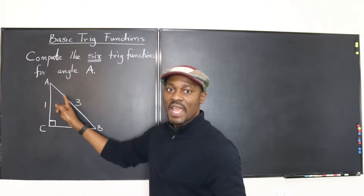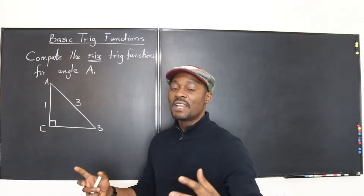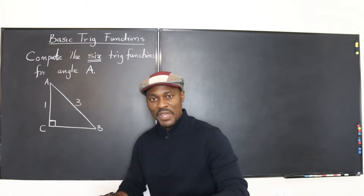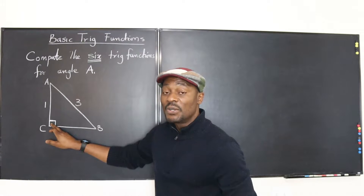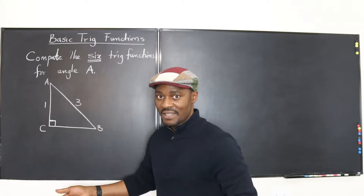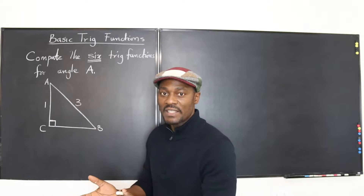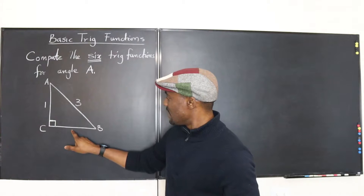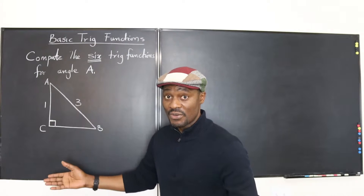Angle A and angle B are complementary angles because when you add them together, you get 90, making the total 180 degrees. Quick review: the side facing the 90-degree angle in a right triangle is always called the hypotenuse, and it's always the longest side. The other sides that form the right angle are called the legs. We don't know one leg, but we can find it using the Pythagorean formula.